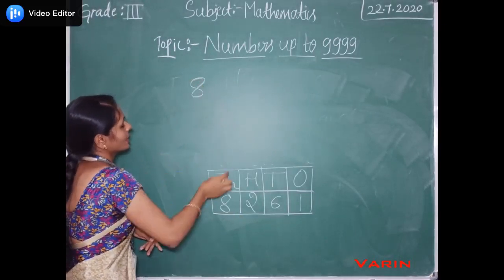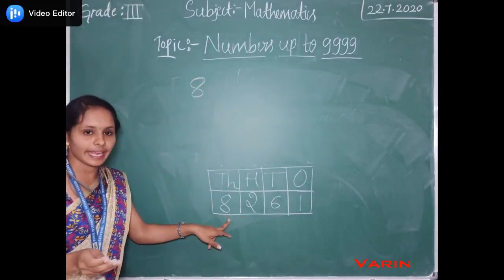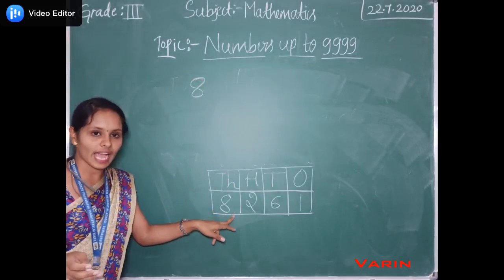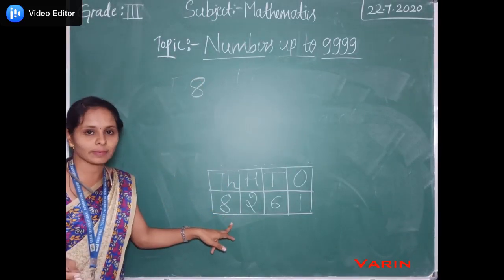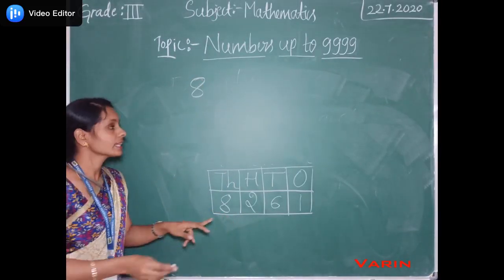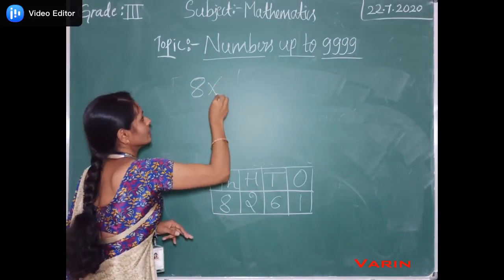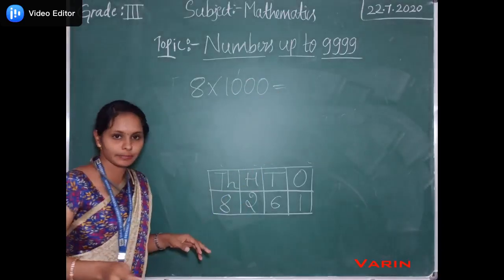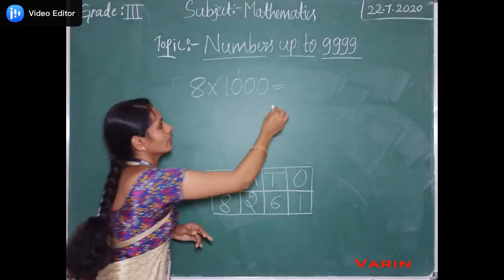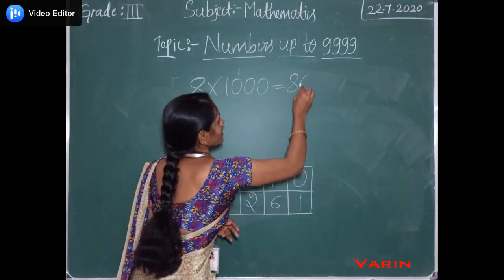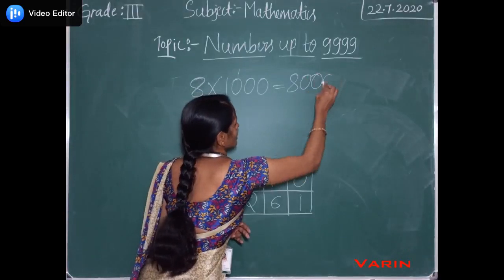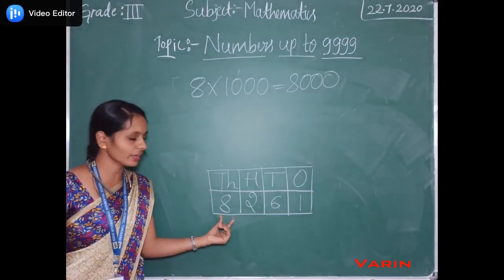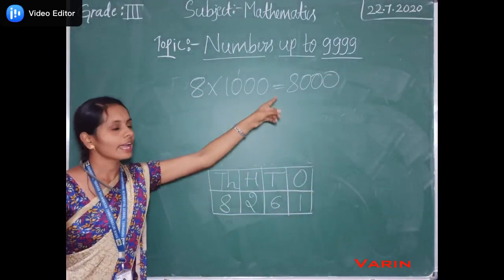In the thousands place, 8 is there. So we have to multiply 8 by 1000. 8 into 1000 it becomes 8000. So the place value of 8 is 8000.